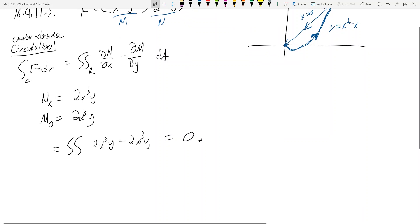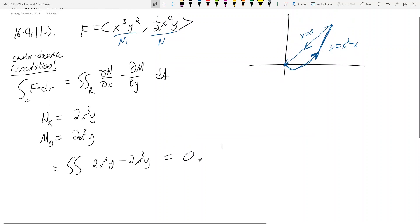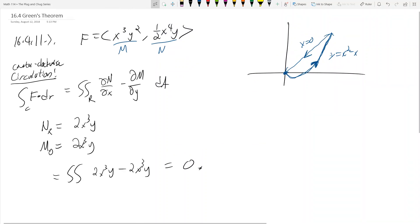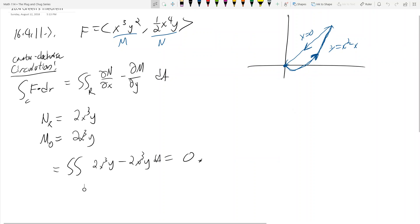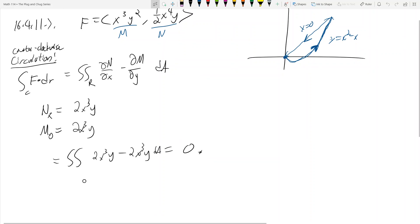Look at what happens. I get the double integral of 2x³y minus 2x³y, which is equal to zero. So we're done for counterclockwise circulation. That's cool. It doesn't always work out this way. It doesn't always end up being zero, but you're integrating zero, so you're going to get zero. It doesn't always work out this well, but in this case it does. We're done here.